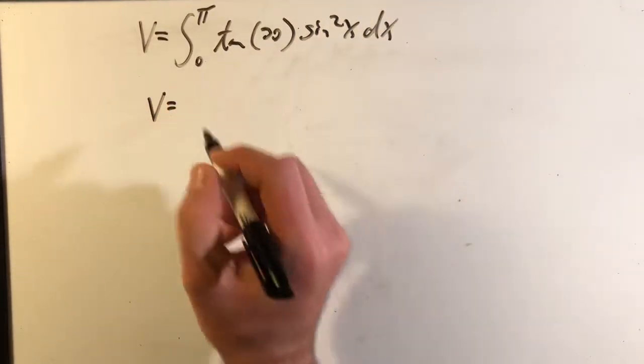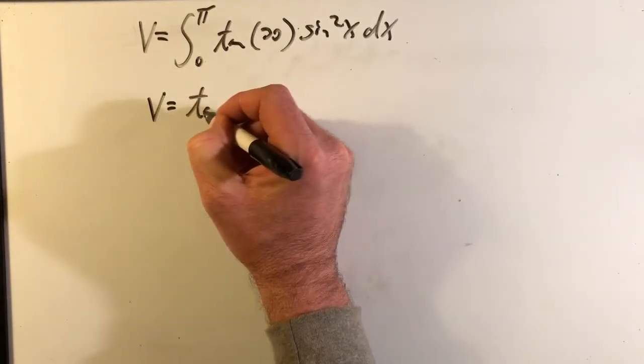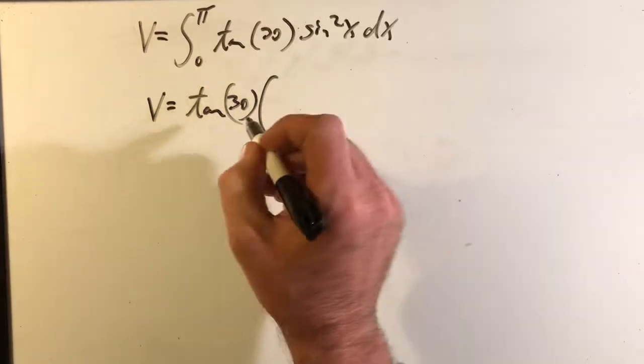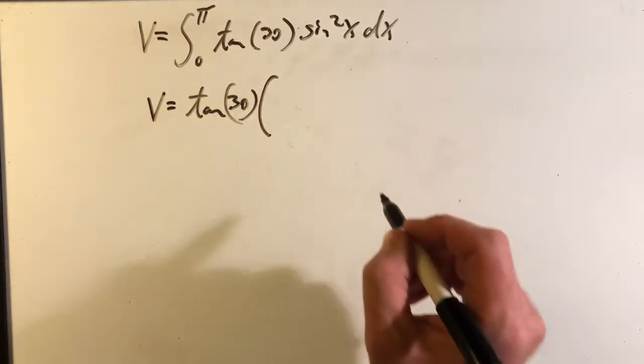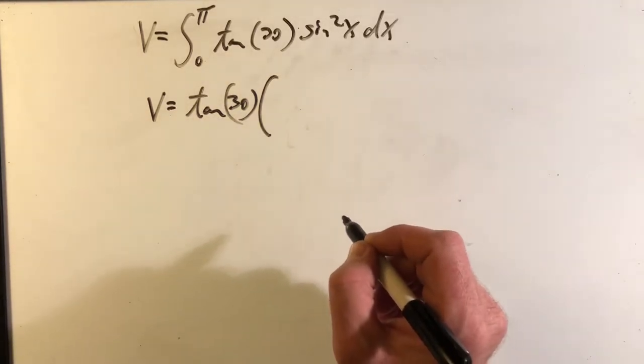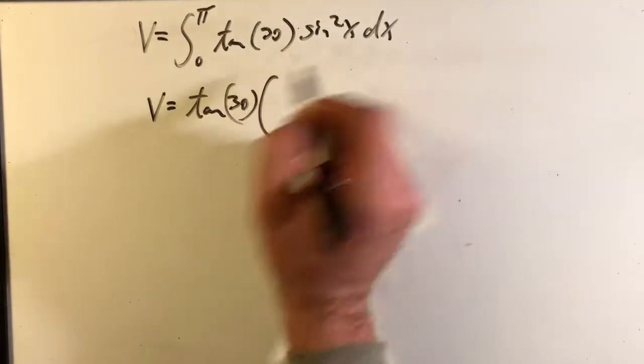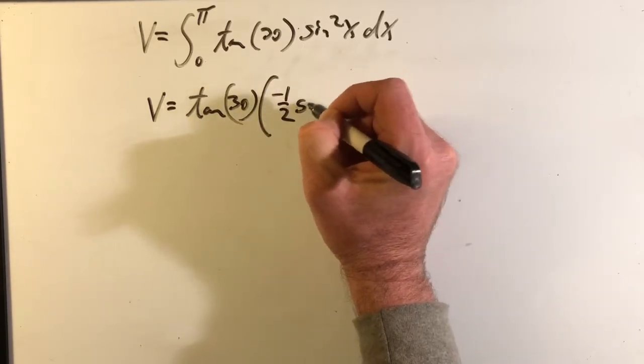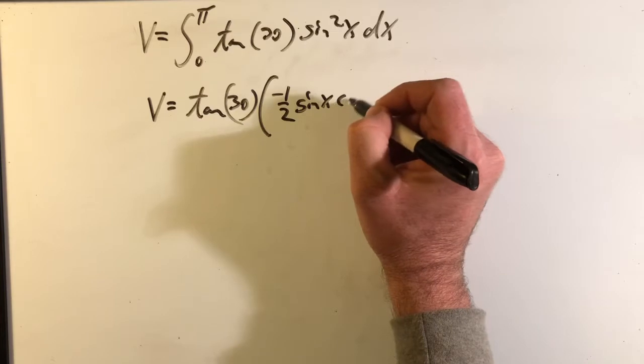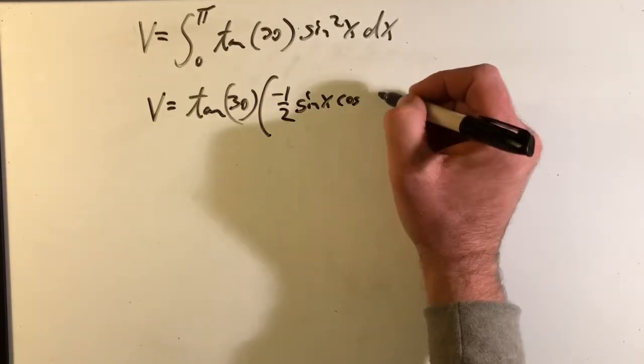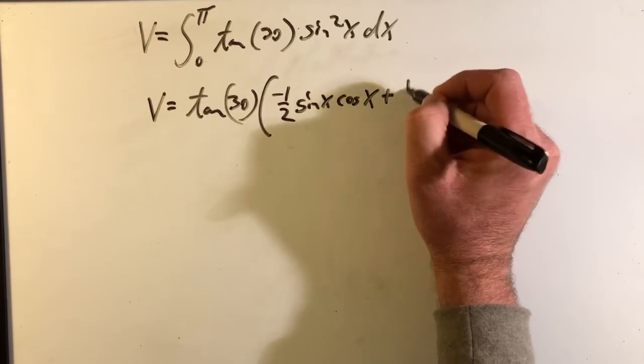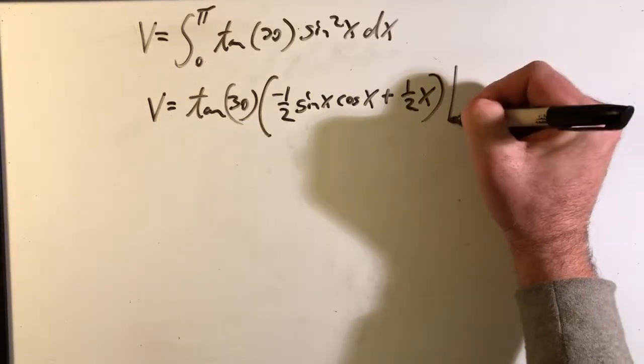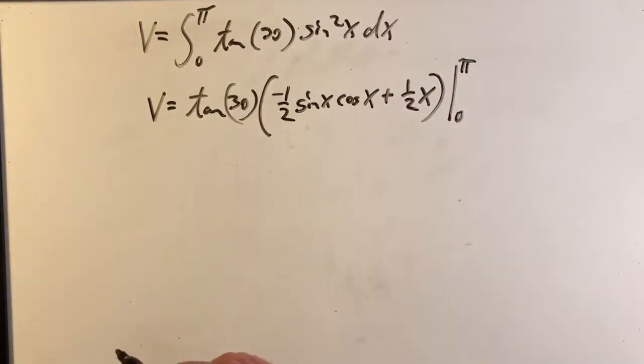So then volume equals, we'll move the tangent 30 out to the front, and then we'll have it times, the integral for sine squared is going to be negative one half sine x cosine x plus one half x. I hope that's right. And that's going to be over the range pi to zero.